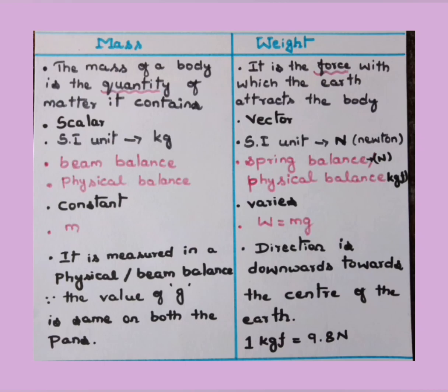In case of mass, it is measured in physical balance or beam balance because the value of g is same on both the pans. In case of physical balance, it will have two pans and g value will be same on both, hence it is constant. But in case of weight, along with mass we multiply g and it changes from place to place. Direction of the weight is downward or towards the center of the earth. One kilogram force is equal to 9.8 newton. So these are the main points related to mass and weight of an object.